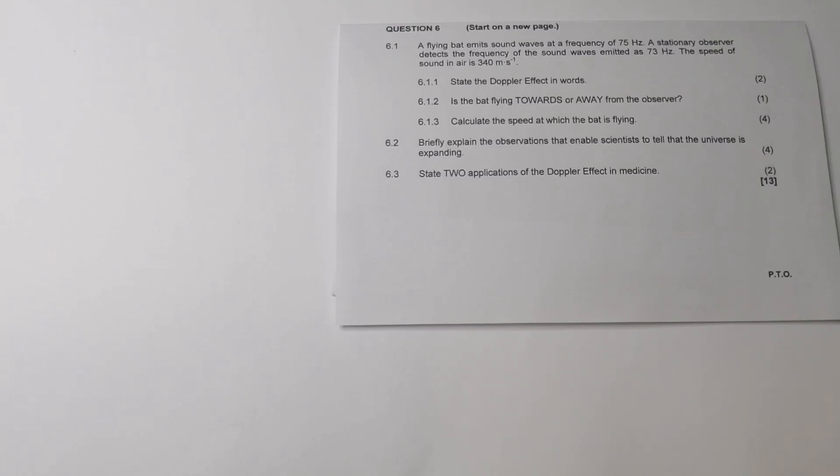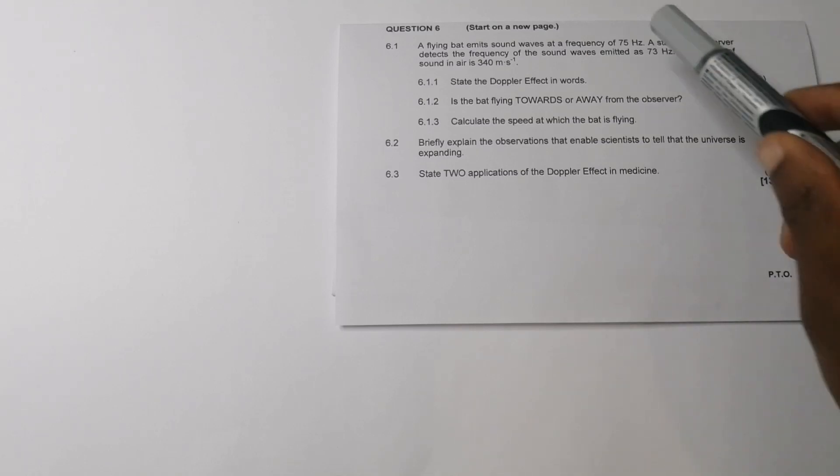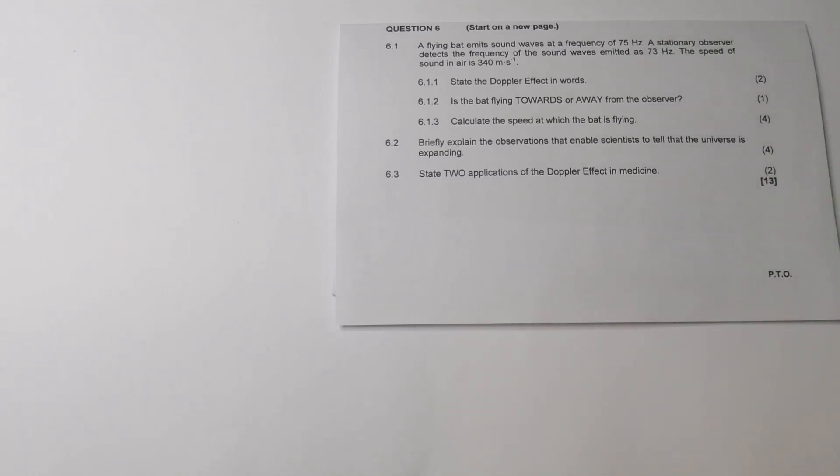It says a flying bat emits sound waves at a frequency of 75 hertz. Now there's a stationary observer that detects a frequency of the sound waves emitted at 73. Now, first of all, you can already see that the emitted frequency and the one that's detected are different. And obviously, we're going to talk about that. And they say the speed of the sound in air is 340 meters per second.